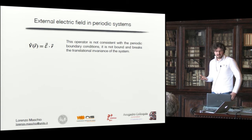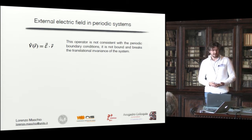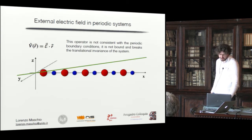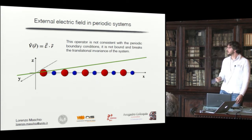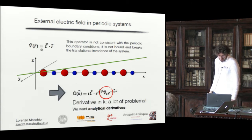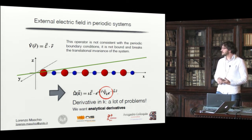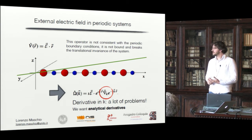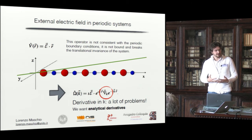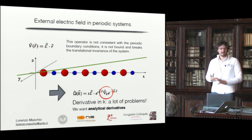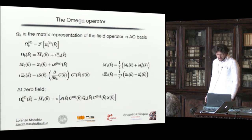The form of the electric field operator in a periodic Hamiltonian system is particularly problematic because the molecular electric field operator is not consistent with the periodic boundary conditions — it breaks translational periodicity. The correct form of the operator, developed several years ago, contains a derivative with respect to the K vector. This creates a lot of problems, and we also want to treat this derivative analytically, whereas other approaches treat it numerically. How this combines with other derivatives present is not straightforward.